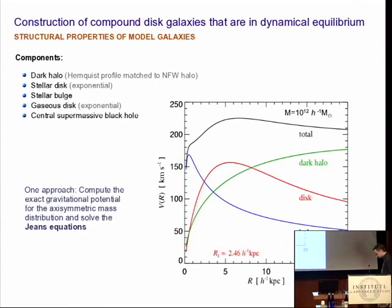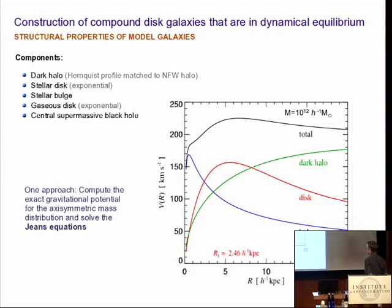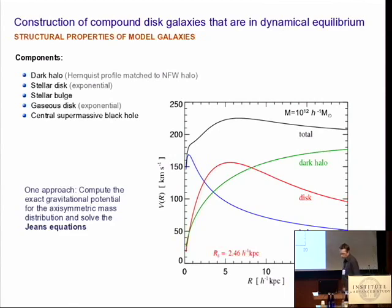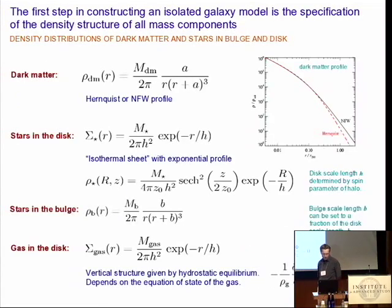In practice you often want a more realistic galaxy model composed of a dark matter halo, a stellar disk, a stellar bulge, maybe a gaseous disk and a central supermassive black hole. These models have structural properties illustrated by a circular velocity diagram, which shows the square root of enclosed mass over radius — a useful diagnostic for where each mass component is important. You can see contributions from the dark matter halo, disk, and bulge, producing a comparatively flat total rotation curve.